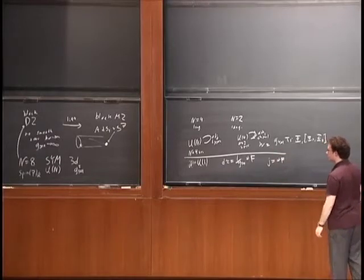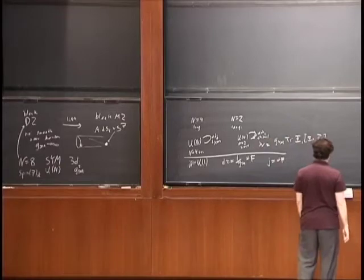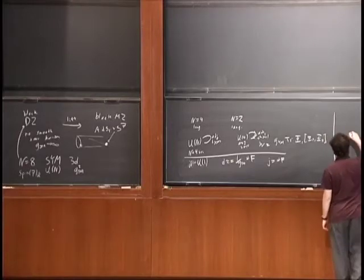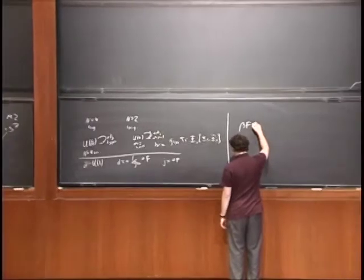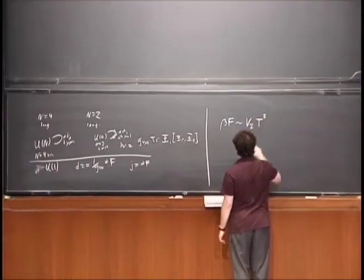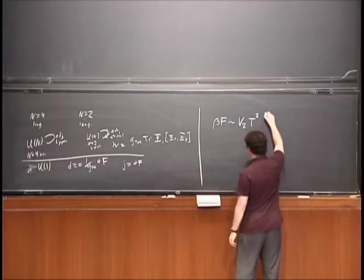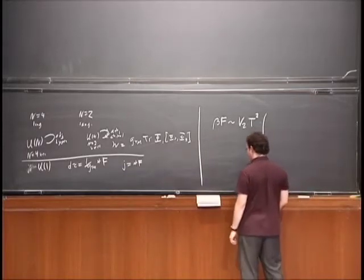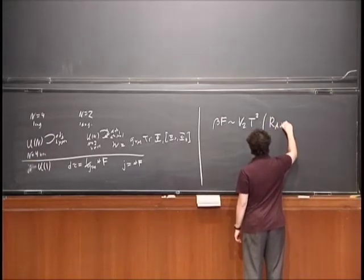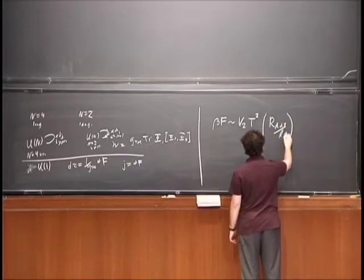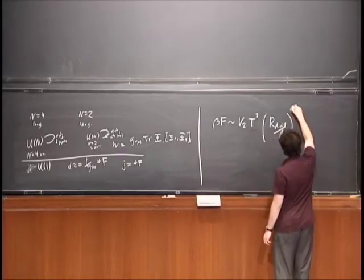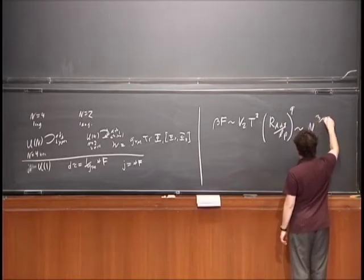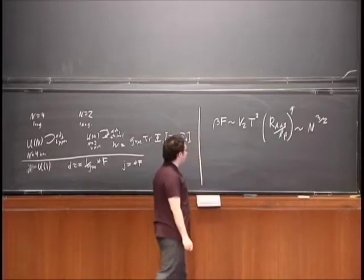On the other hand, you have a nice supergravity solution with a smooth near horizon ADS4 × S7. Assuming ADS/CFT, you can read off various properties. The free energy of the thermal theory, beta times F, goes like the two-dimensional volume of space times T^2, analogous to V3 T^3 of N=4 theory in four dimensions. The number of degrees of freedom goes like N^(3/2), which is a very famous and surprising scaling — it doesn't look anything like a gauge theory with N^2 degrees of freedom.